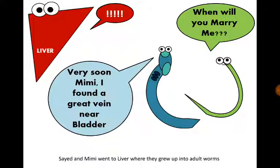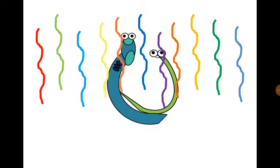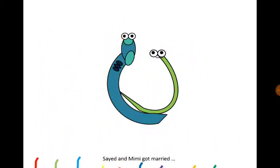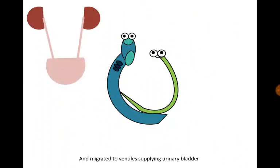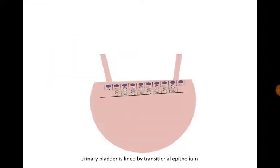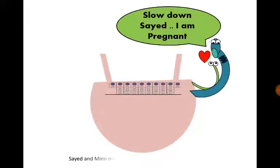Sayed and Mimi went to the liver, where they grew up into adult worms. Sayed and Mimi got married and migrated to the venules supplying the urinary bladder. The urinary bladder is lined by transitional epithelium, and as Sayed and Mimi reached the venules supplying it,